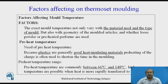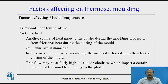Factors affecting mold temperature: the exact mold temperature not only varies with the material used and the type of mold, but also with the geometry of the molded article and whether loose powder or preheated preforms are used. Regarding preheat temperature: because plastics are generally good heat insulating materials, preheating of the charge is often used to shorten the molding time. Preheat temperature ranges are commonly 66°C to 148°C. Another source of heat input during molding is frictional heat during the closing of the mold — in compression molding, the material is forced into flow by the closing of the mold.